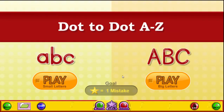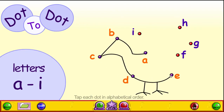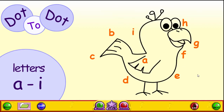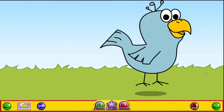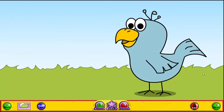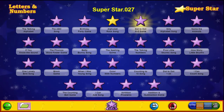And we have a dot-to-dot. Put the letters in alphabet order: A, B, D, E, F, G, H, I. I'm going to click on the star and go to the superstar page.